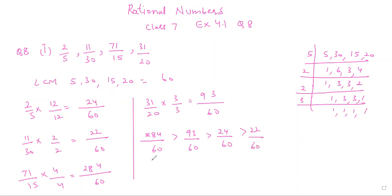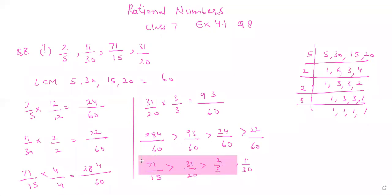Writing them back in original form: 284/60 means 71/15, then 93/60 means 31/20, then 24/60 means 2/5, and 22/60 means 11/30. So I hope the question is clear. If any type of doubt is there, feel free to ask by commenting in the comment box. Now let's move to the second part.